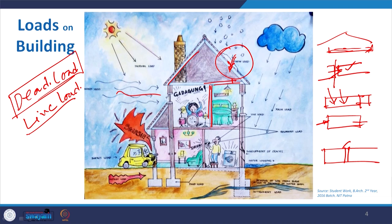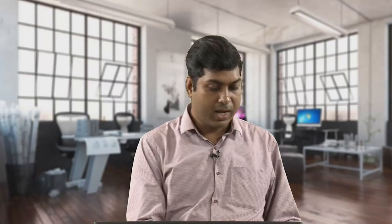Live load is movable. For example, I am standing in a position in the room — I add load to it, but the moment I go out, that load is released. So I am live load. Similarly with furniture, because it is movable — today it is arranged one way, tomorrow it can be shifted. These are live loads. Persons and movable furniture are live load; beams and columns are dead load.